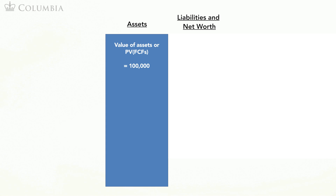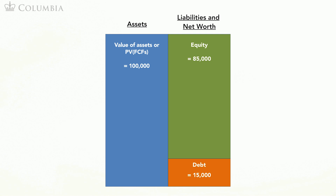Let me illustrate this method by using the market value balance sheet. By discounting the free cash flows, we obtain the value of the assets of the firm. We place these 100,000 on the left side of the balance sheet. On the right hand side, we place the value of debt of 15,000. Since the market value balance sheet needs to balance, the value of equity must be 85,000.